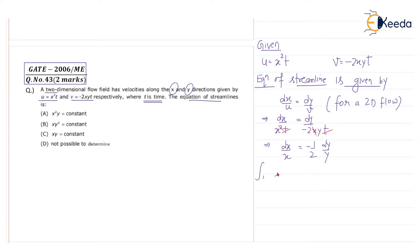Integrating, we get ln x equals minus one by two ln y plus ln c. We can write ln y to the power minus one by two. The minus half coefficient can be taken to the power, into ln c. Using ln a plus ln b equals ln ab, we can write c times y to the power minus one by two.